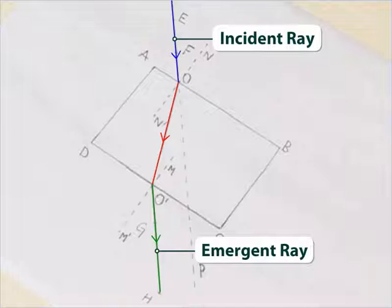The ray bends towards the normal when it enters the glass slab and bends away from the normal when it leaves the glass slab.